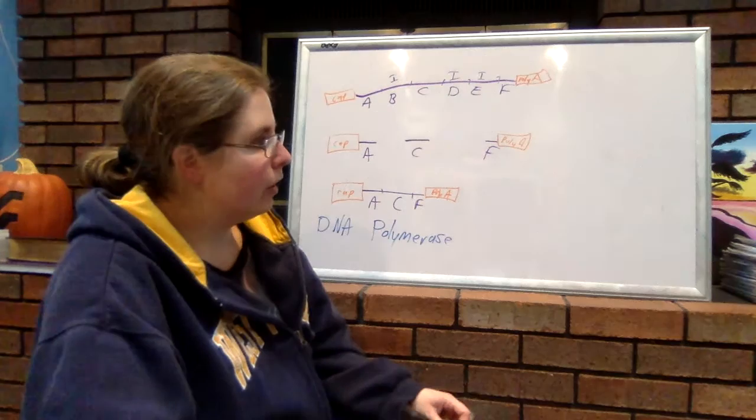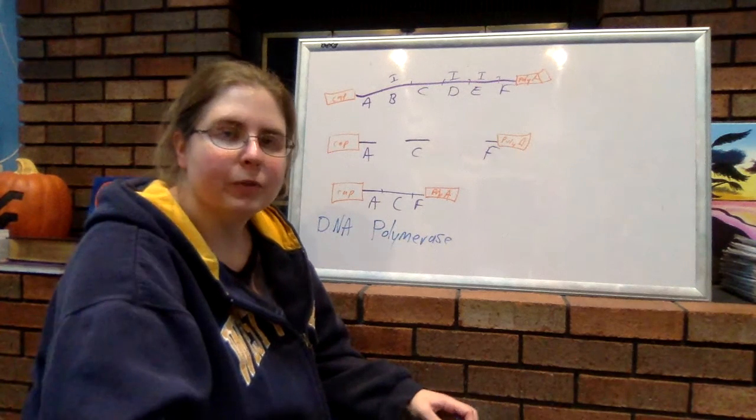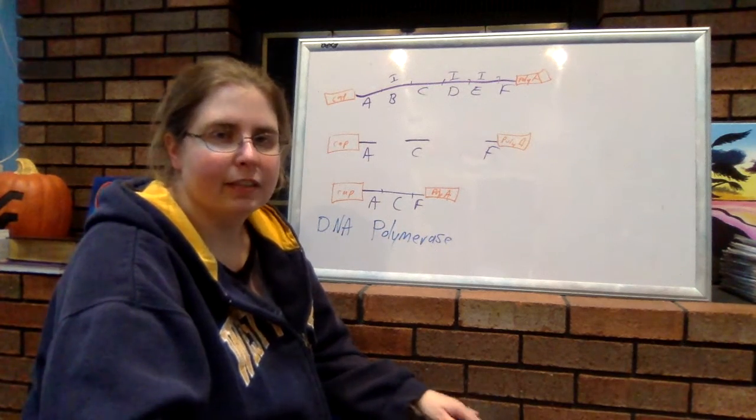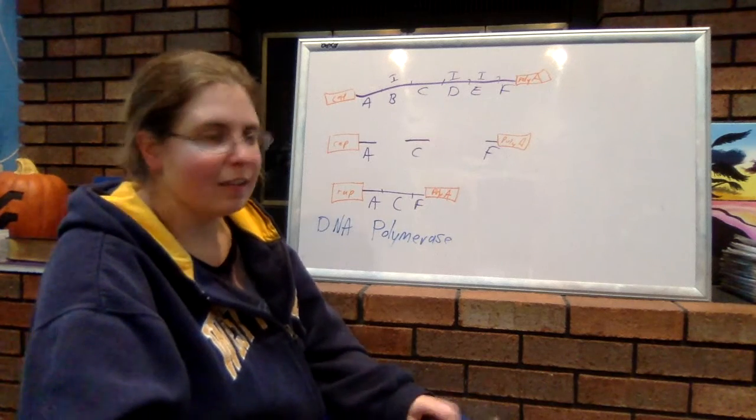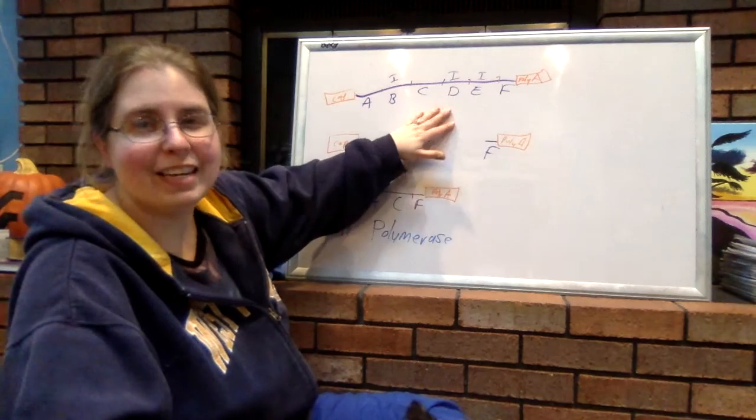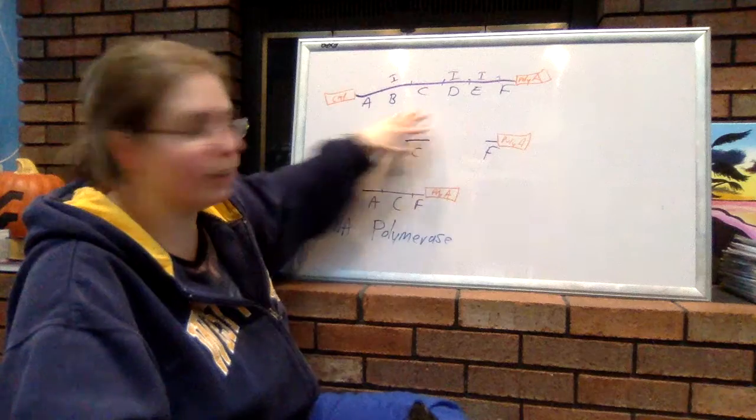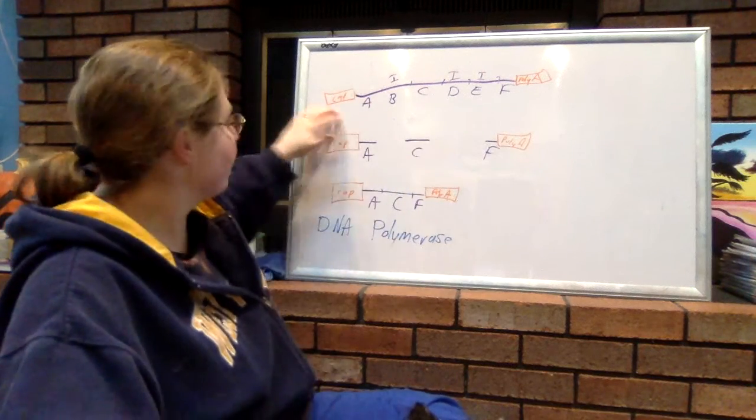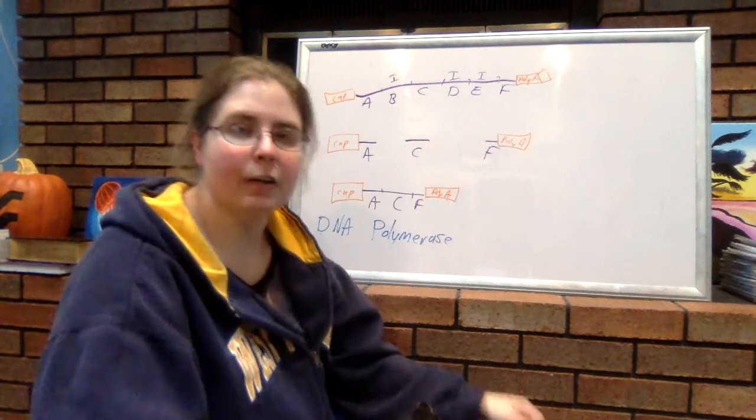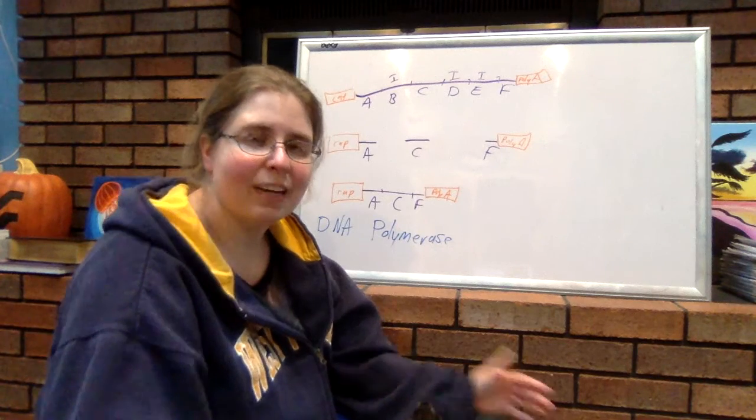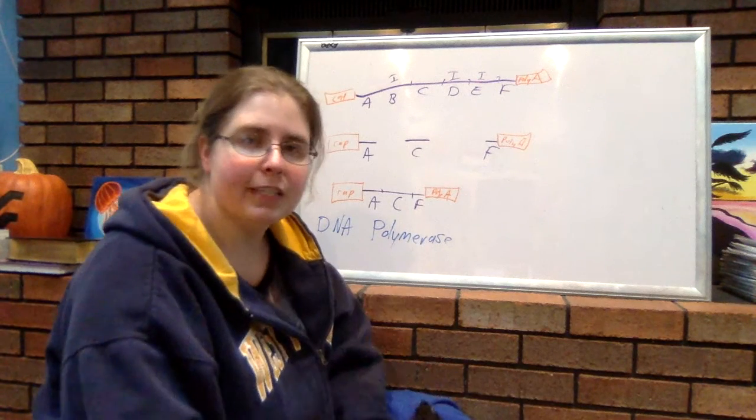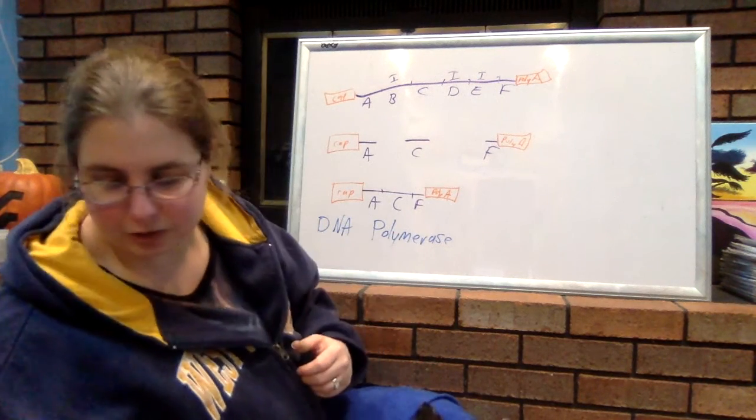Well, we can have this thing called differential intron splicing. And what that means is, we start off with the same RNA section, you know, all this. We have the modified cap and the poly-A tail. But, we take, we consider different sections of introns and we cut out different sections.